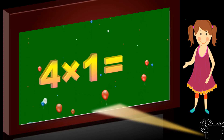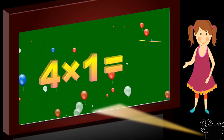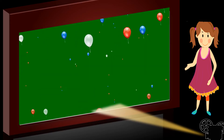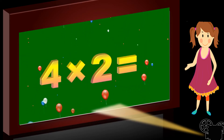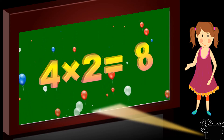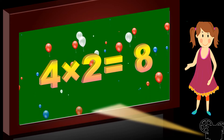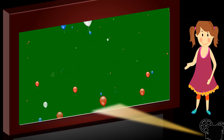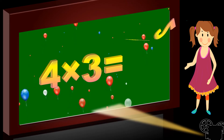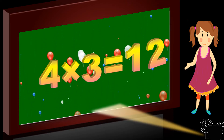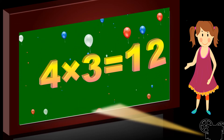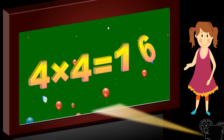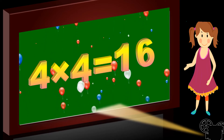Four ones are four. Four ones are four. Four twos are eight. Four twos are eight. Four sixes are twenty-four.